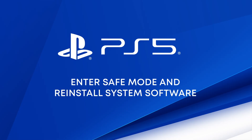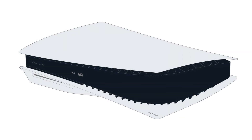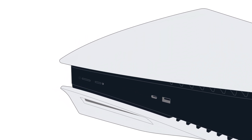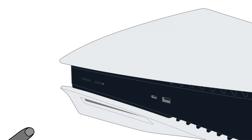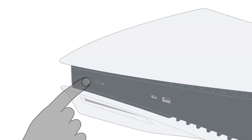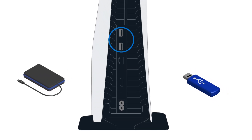Now it's time to put the PS5 console into safe mode and perform the reinstallation. If the PS5 is powered on, turn it off by pressing and holding the power button until the system beeps twice, and then wait until all system lights have turned off. Power up your PS5 console in safe mode by holding down the power button until the system beeps twice — this takes 7 or 8 seconds. Connect the USB device that contains the console reinstallation file to one of the USB ports on the back of the console.